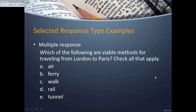A multiple response item also requires more thinking. Instead of choosing one correct answer, the test taker must choose several answers that are correct. For example: which of the following are viable methods for traveling from London to Paris? Choose all that apply—air, ferry, walk, rail, tunnel. The test taker must look at all options, eliminate some, and select those that are correct, making this a somewhat higher-order item type.